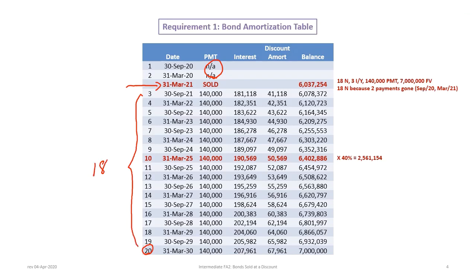We can calculate the present value of the bond on the date the bonds are sold using 18N, 3% interest — because the yield is 6% divided by two — a $140,000 payment, and a $7 million face value or future value. Two payments are gone because of when they were issued, and the payment remains $140,000 each period.